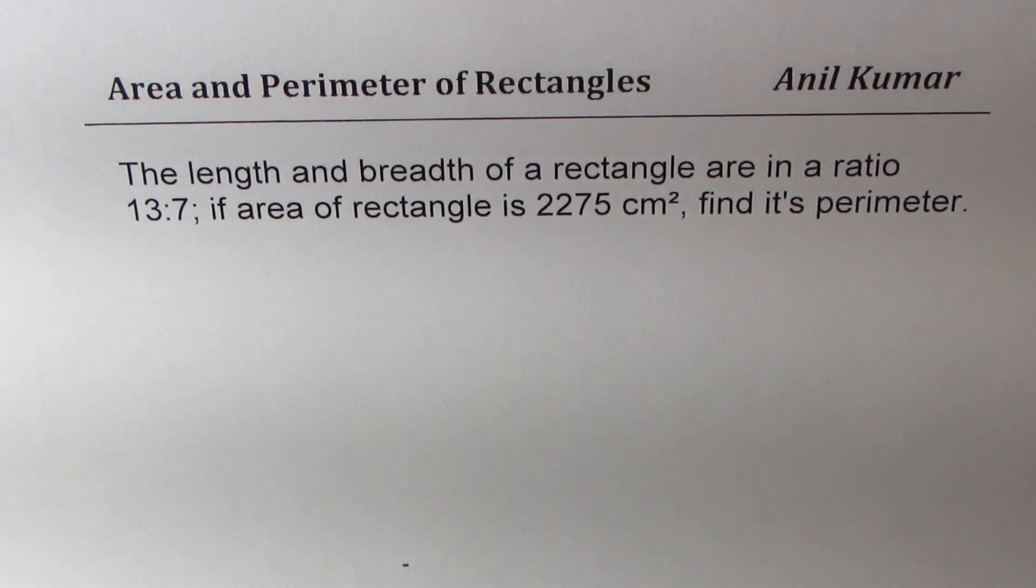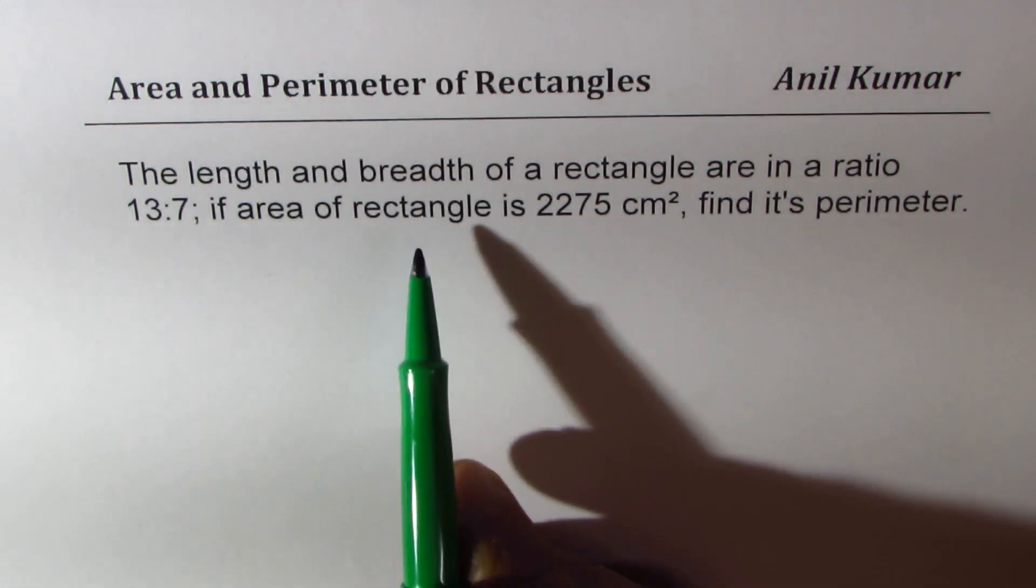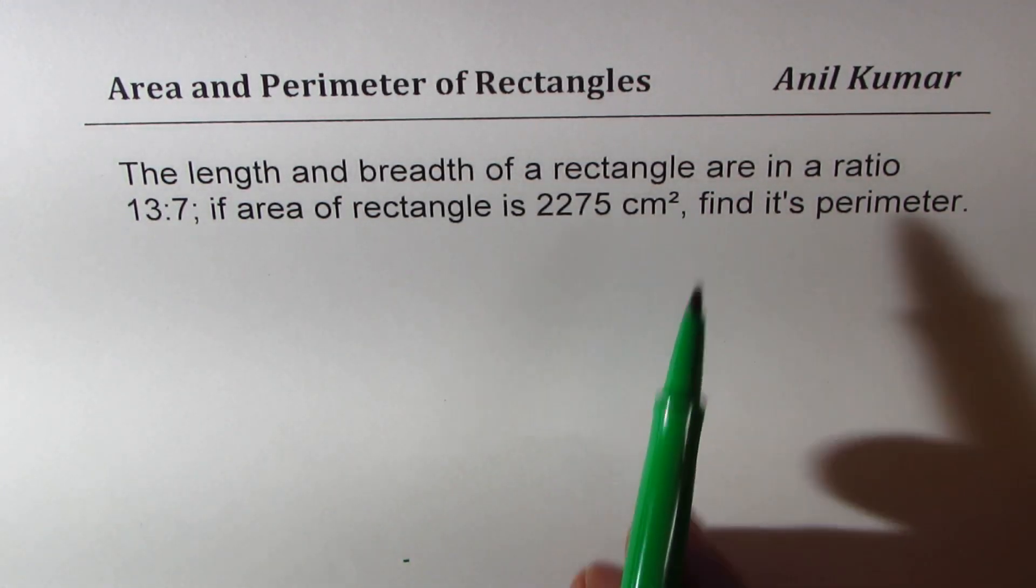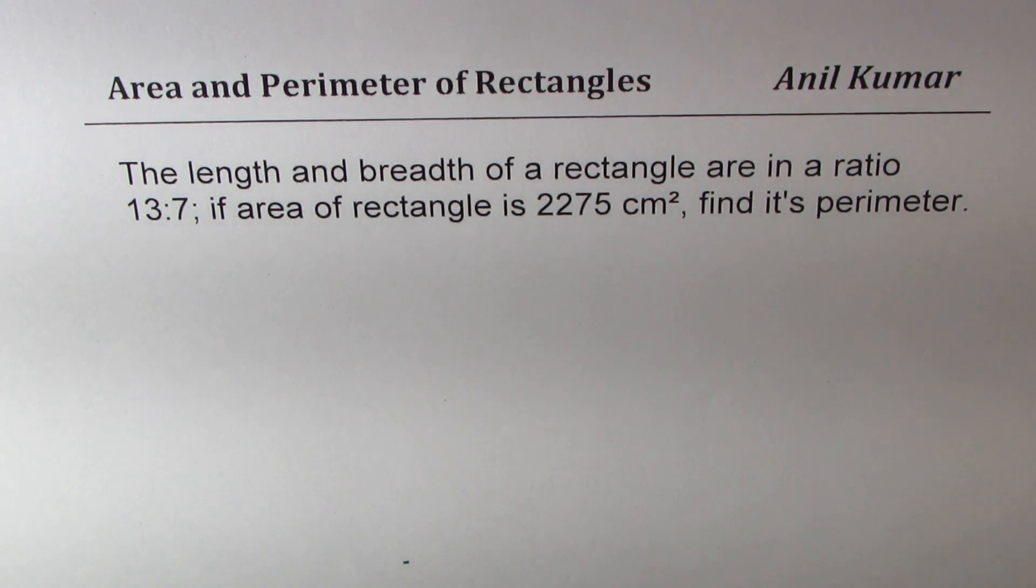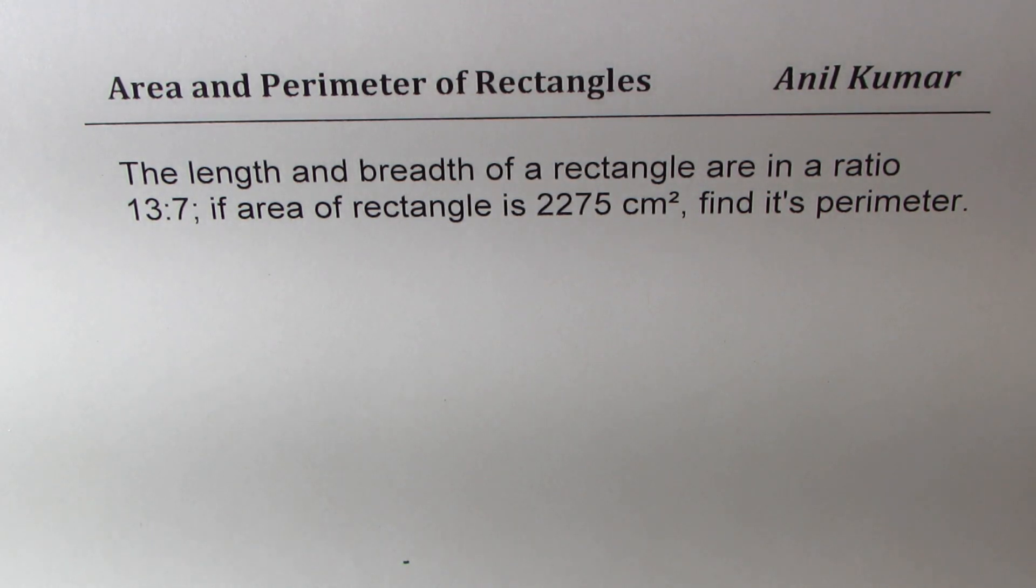The question here is: the length and breadth of a rectangle are in a ratio of 13 to 7. If area of rectangle is 2275 centimeter square, find its perimeter.